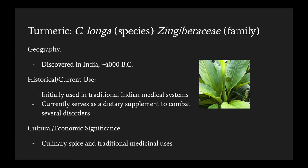Turmeric, or Curcuma longa, dates all the way back to India in 4000 BC. This botanical was initially used as a dye, but was later used for its ability to cure jaundice and venereal disease, and for its ability to combat mental disorders. Currently, it is mostly used as a dietary supplement for respiratory infections, digestive disorders, liver disease, depression, and arthritis.